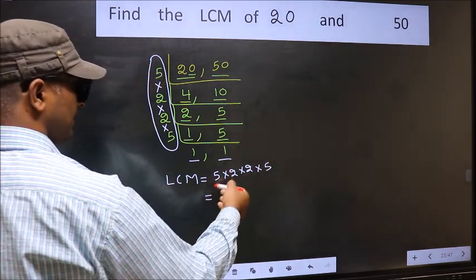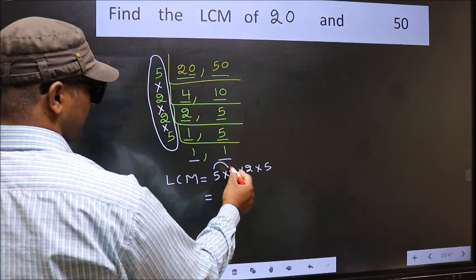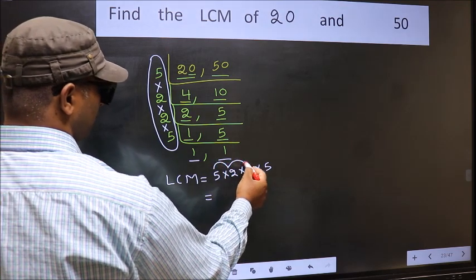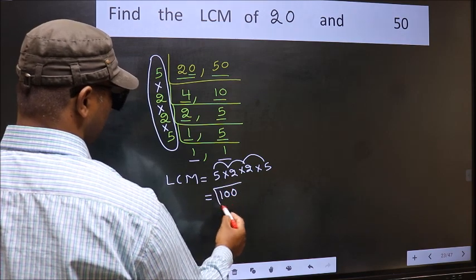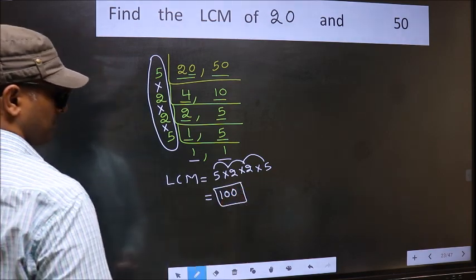So let us multiply these numbers. 5 into 2, 10 into 2, 20 into 5, 100. So 100 is our LCM.